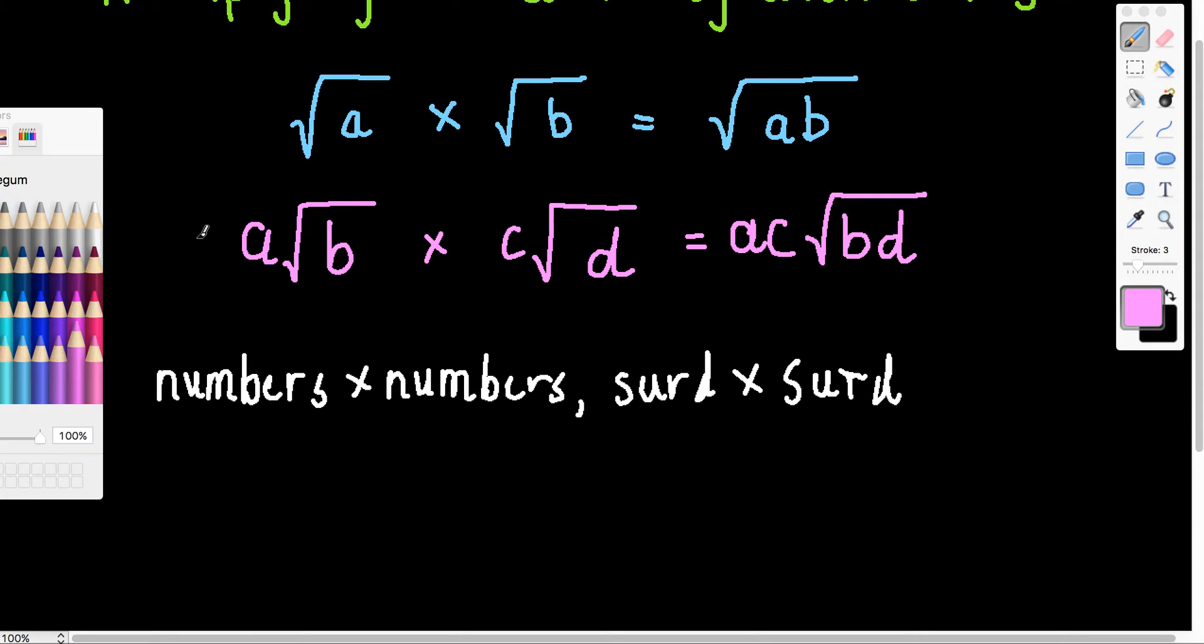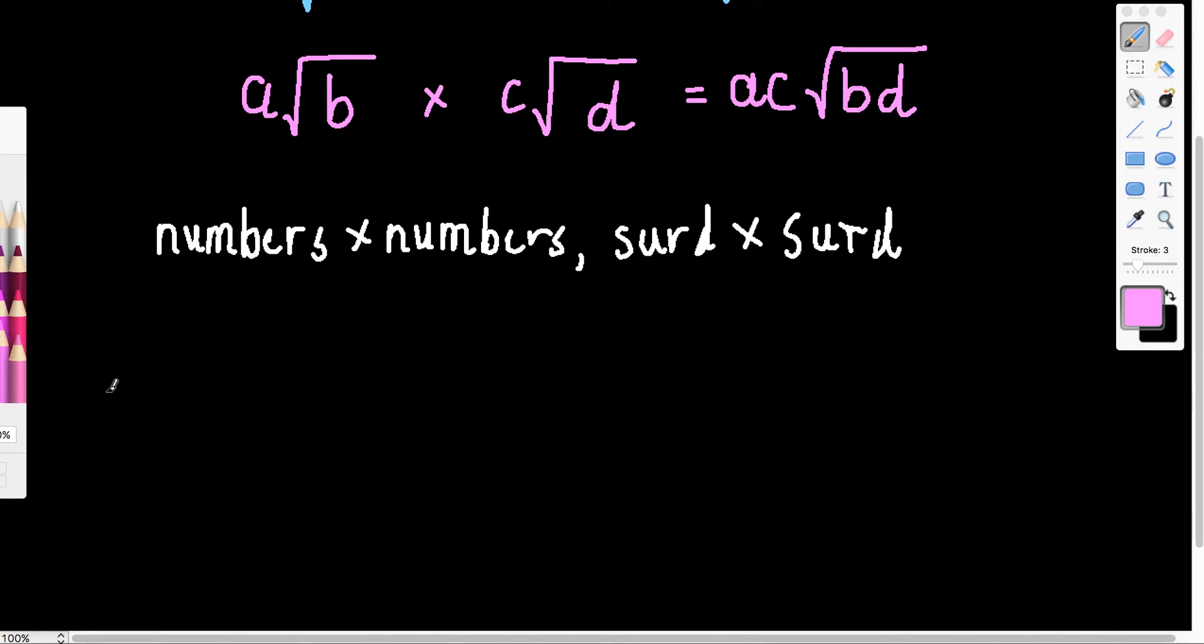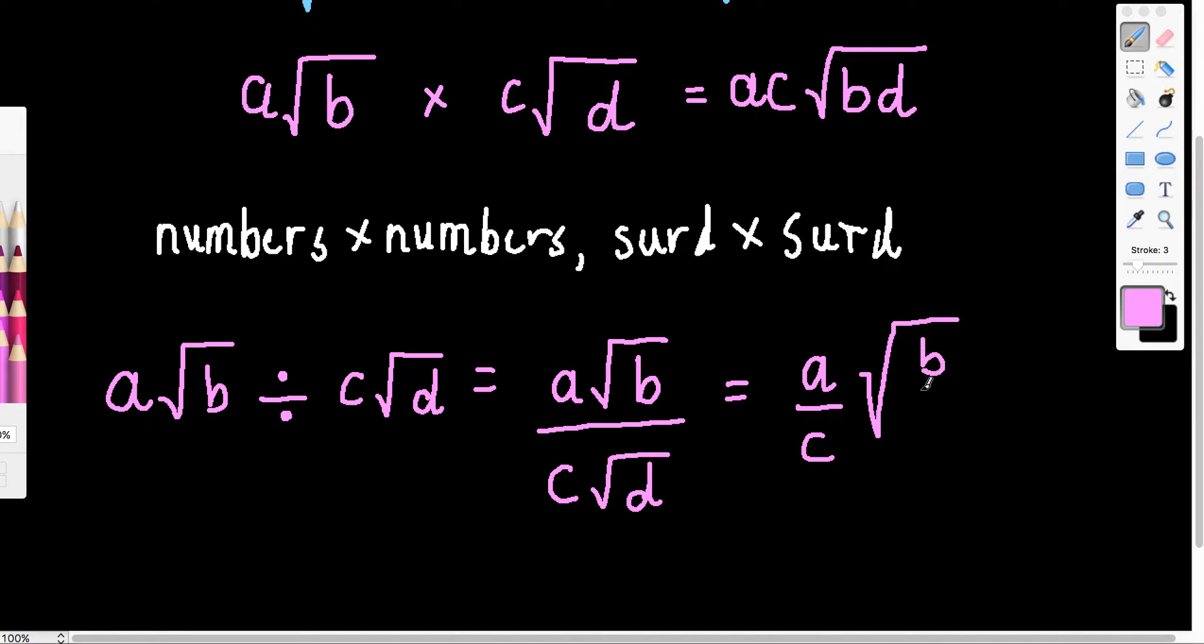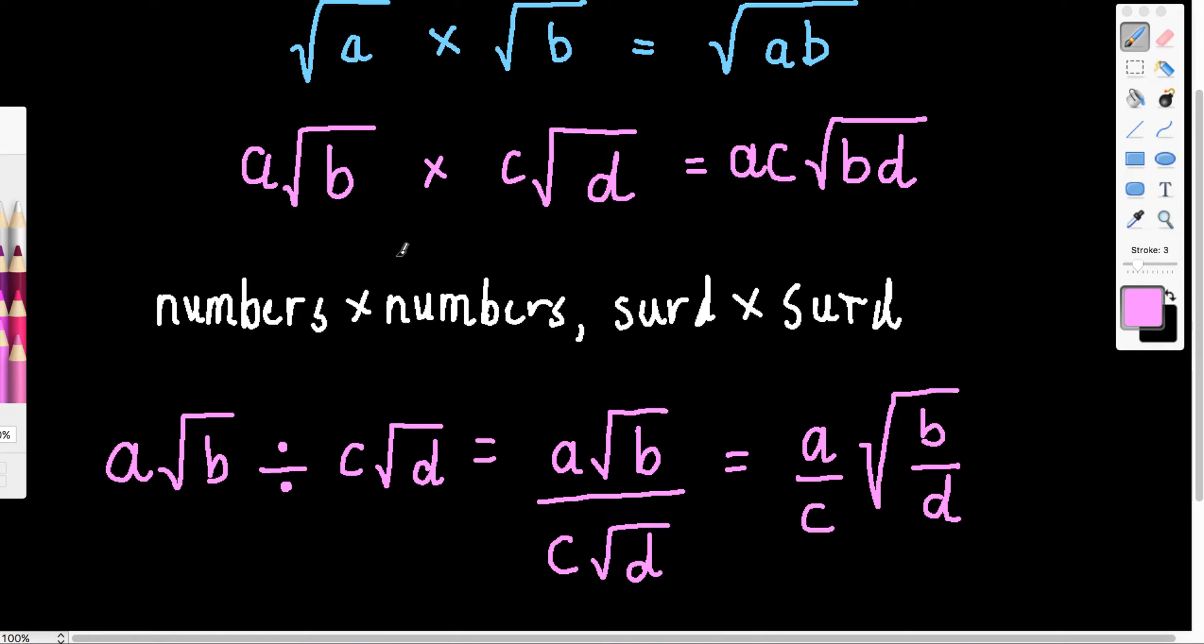Now of course this video is not just about multiplying. You can also divide with surds as well. Now if you come across something like this, a root b divided by c root d, we know that can also look like this: a root b over c root d. When we simplify again, numbers and then surd. This is the same as a over c root b over d. So there we have a couple of rules just using pronumerals. But I obviously want to show you how this would look when we've got some specific examples in there.